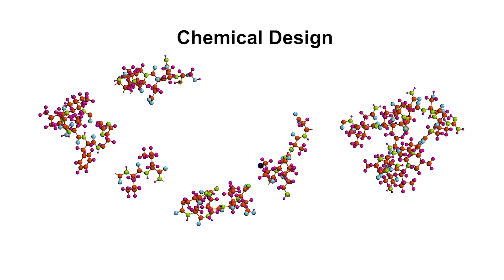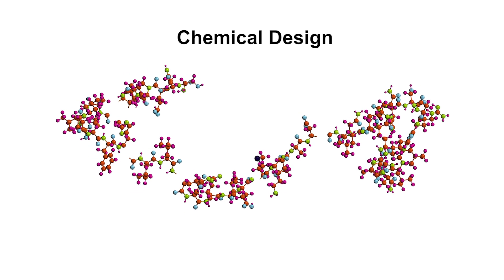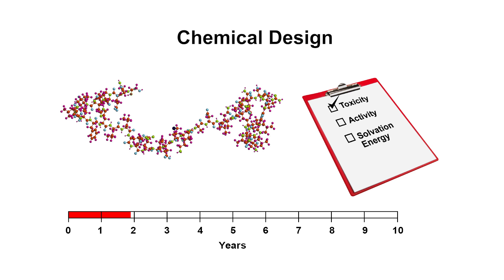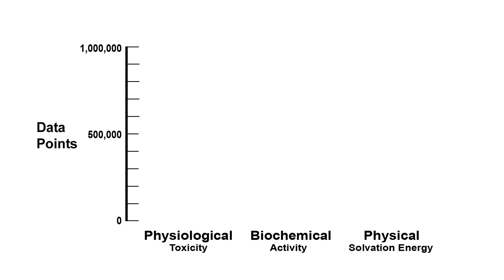In the chemistry industry, chemical design is a big challenge. For example, designing drugs with the right toxicity and activity properties on average takes 10 years. Here are some properties that we are interested in predicting. As you can see, it's not a lot of data to work with.